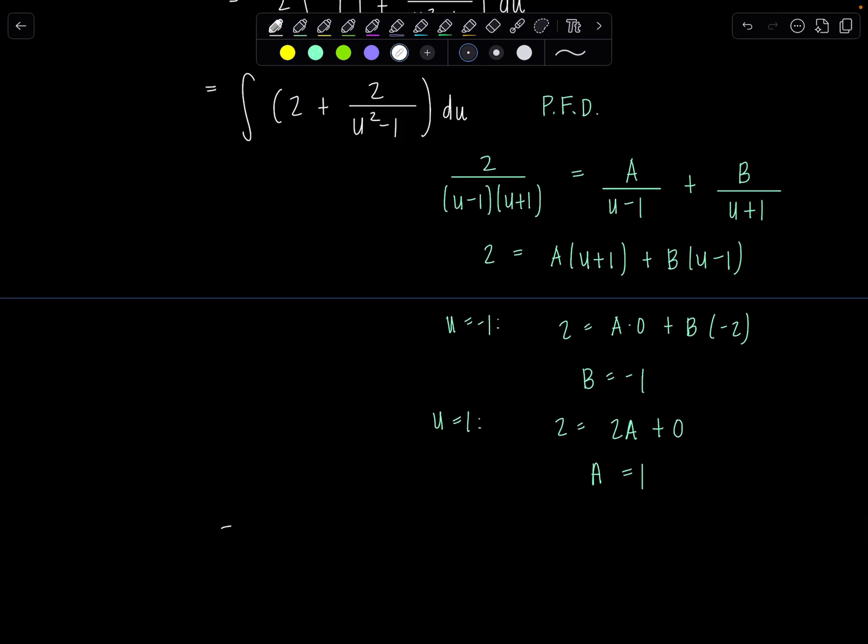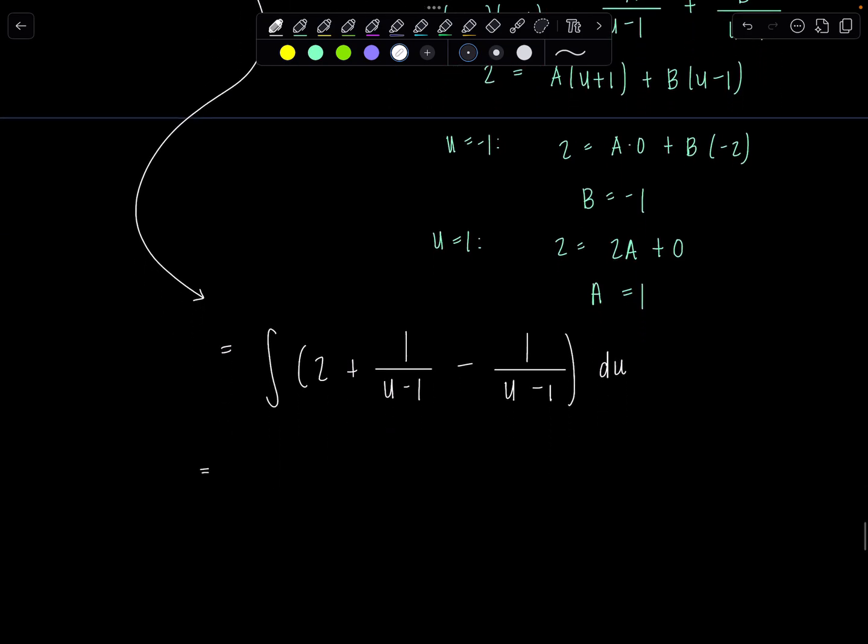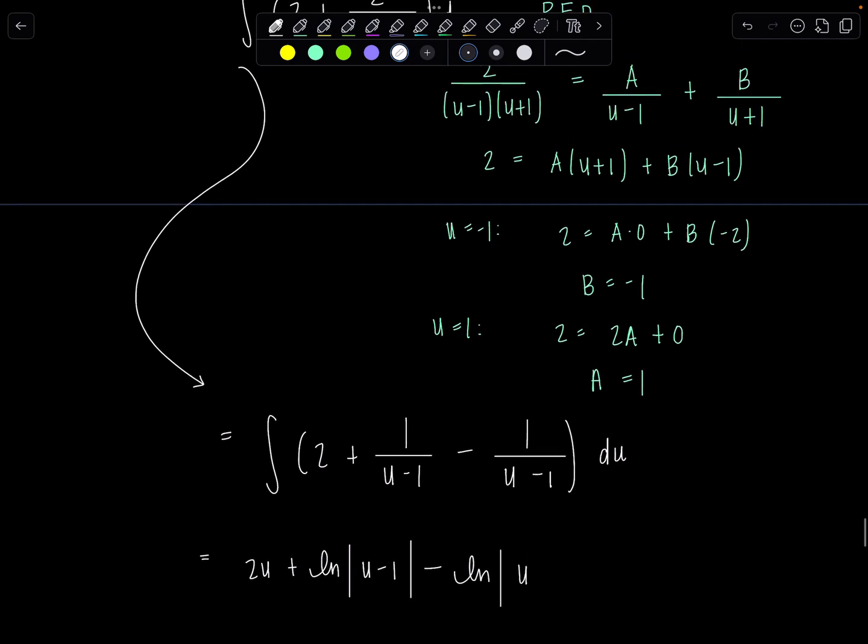Okay, good. So here we have now our integral pretty much ready to go. 2 plus A is 1 over u minus 1 minus, right, B is negative, minus 1 over u minus 1 du. And then from here, anti-derivative is pretty relaxing. 2u plus ln absolute value u minus 1 minus ln absolute value u. Oops, that should be a plus, shouldn't it? Oh me, oh my. Plus 1. Please forgive me. Plus C.